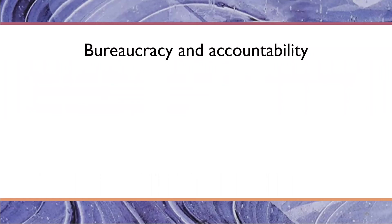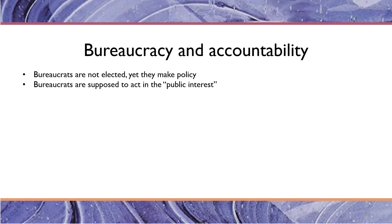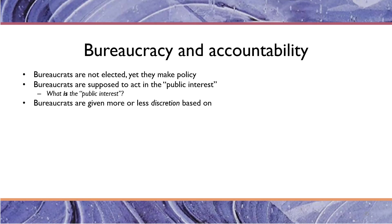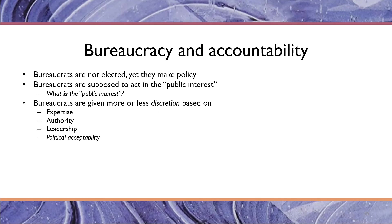Bureaucracy and particularly the permanent civil service always raises the question of accountability. Bureaucrats aren't elected, but they make policy decisions every day about what the government should do. They're supposed to act in the public interest, but the question is, what is the public interest? They're given discretion to act in the public interest based on their expertise, their legal authority, the leadership of the agencies that employ them, and the political acceptability of their exercise of bureaucratic discretion. For example, the Federal Aviation Administration regulates the safety of airplanes. If they find there's a part of an airplane that's prone to fail, they'll issue an airworthiness directive that says all these airplanes have to fix this part.